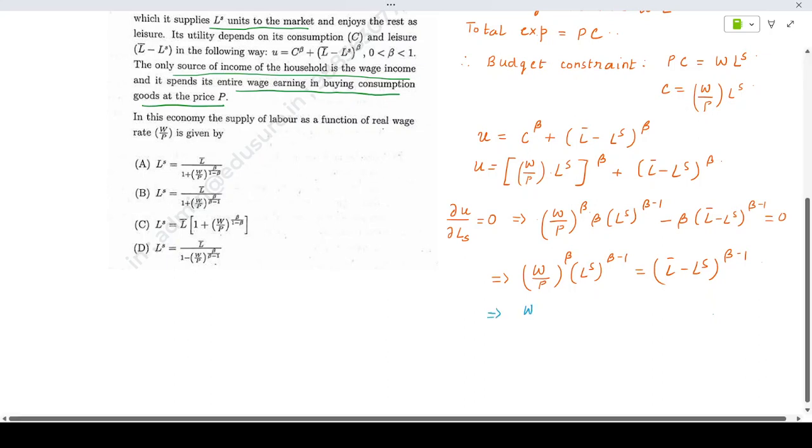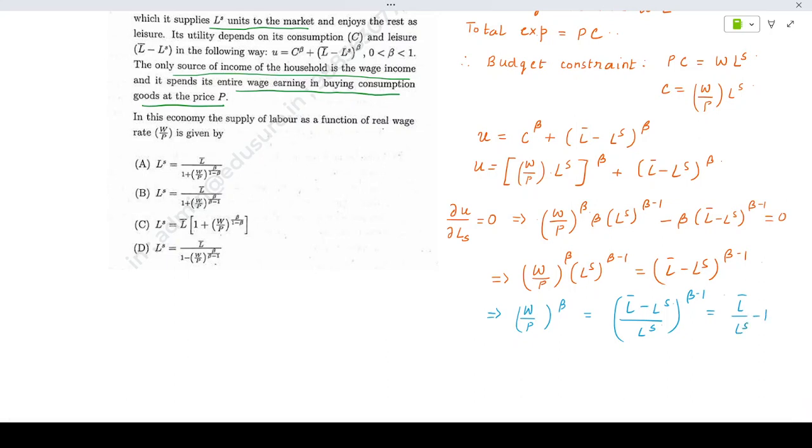That implies W by P times LS to the power beta minus 1. This is basically L bar by LS minus 1 to the power beta minus 1, which equals L bar minus LS to the power beta minus 1.